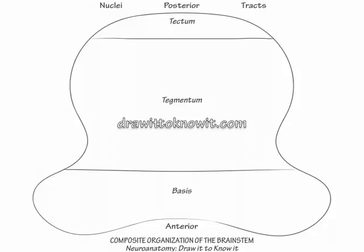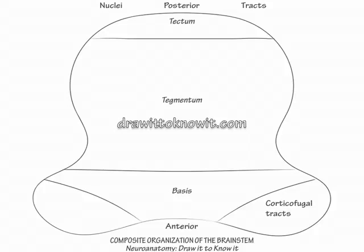Within the basis, show the ventral-lying corticofugal tracts, which comprise the efferent fiber tracts from the cerebral cortex. They include, from medial to lateral, the frontopontine, corticobulbar, corticospinal, and parietopontine tracts.